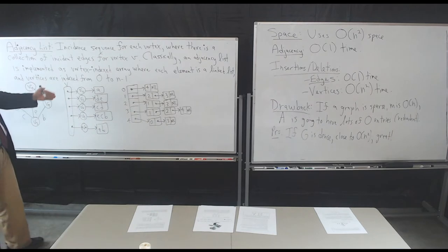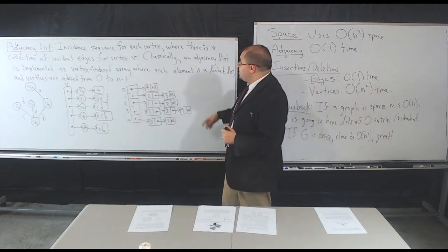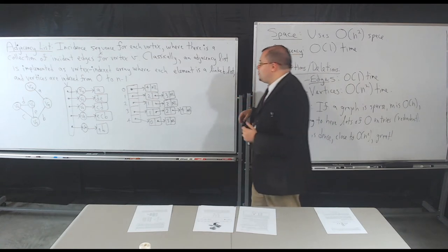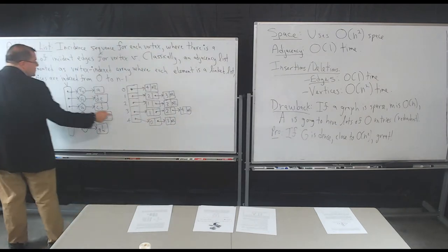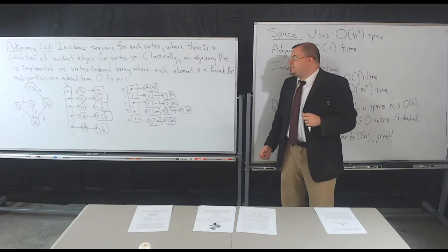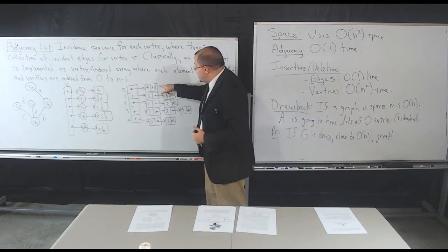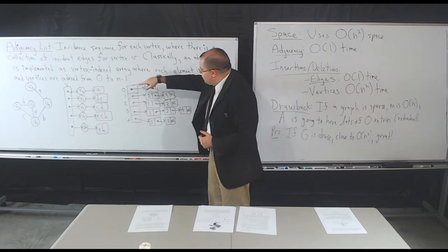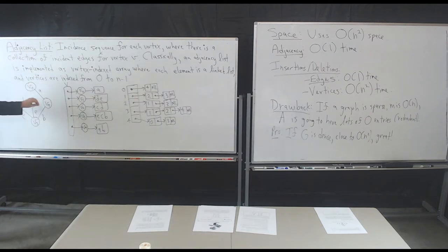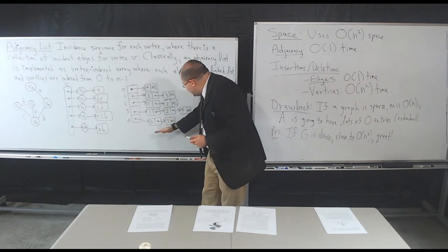The classic implementation of an adjacency list: you have an array where each element is a linked list. Each vertex is numbered from 0 to n-1, and in each linked list node I put the other endpoint of the edge, or any relevant data such as a reference to an edge object. For example, if I look at vertex 0, it's adjacent to vertex 4 — so vertex 0's linked list contains 4 as one of its adjacent vertices.